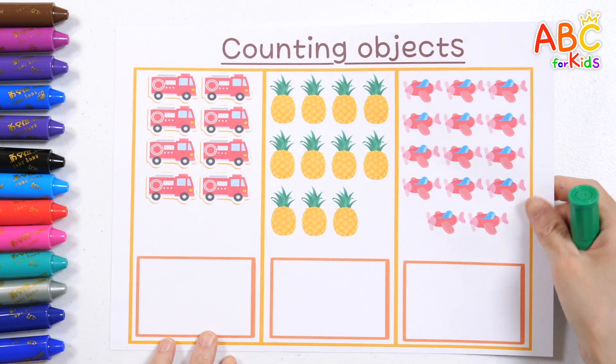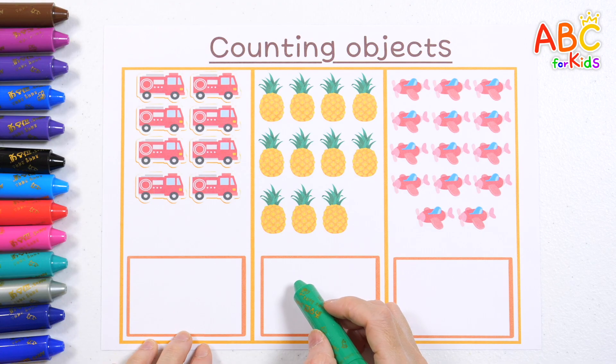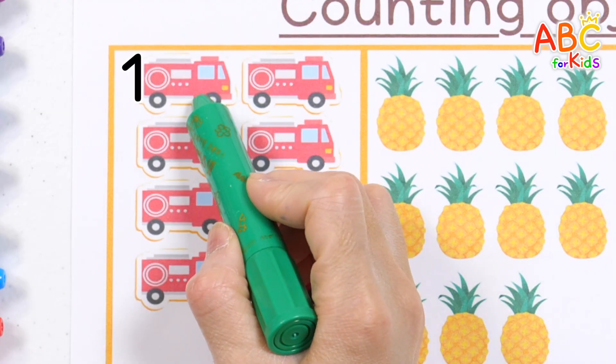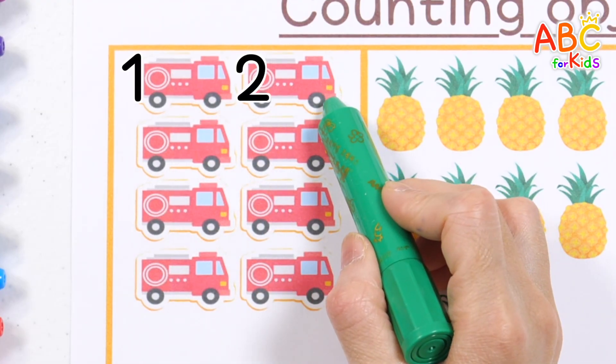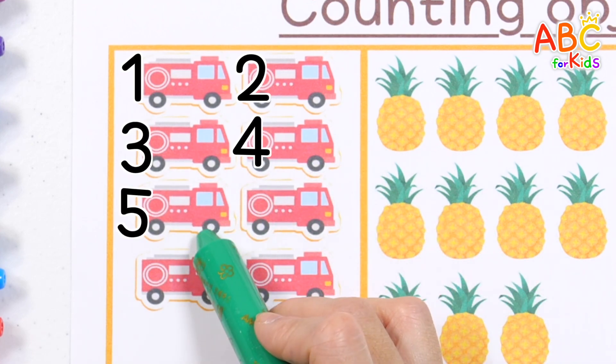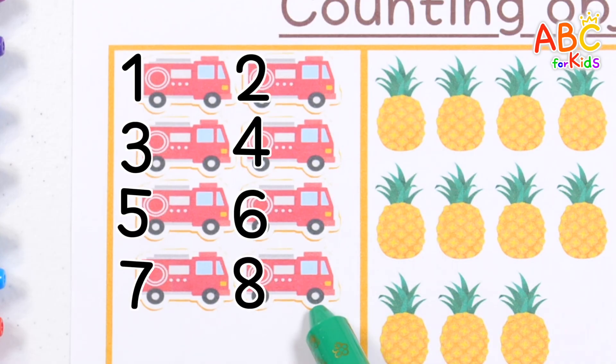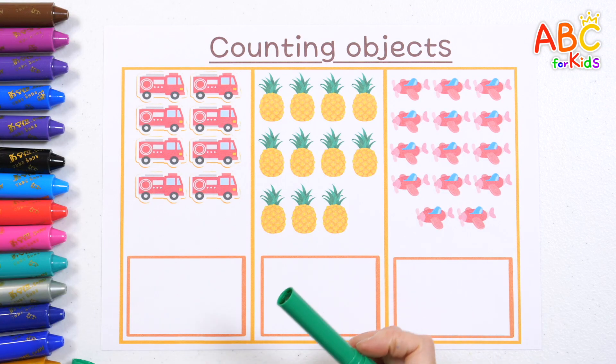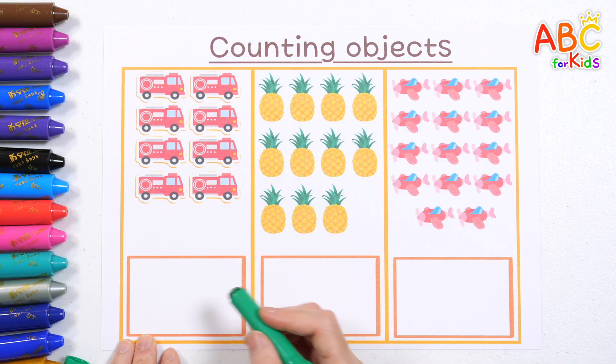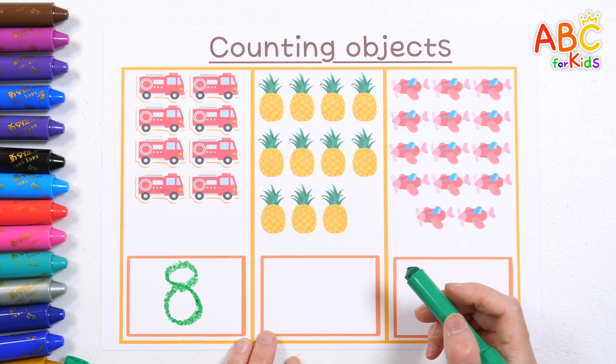Let's count some things together. How many fire trucks do you see? 1, 2, 3, 4, 5, 6, 7, 8. There are 8 fire trucks. Let's write the number 8. Good job.